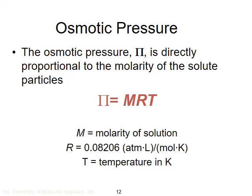Osmotic pressure, denoted with the capital Greek letter pi, is directly proportional to the molarity of the solution (capital M) times the ideal gas constant R times the temperature of the solution. Molarity is in units of moles of solute per liter of solution. The ideal gas constant used is 0.08206 atmospheres times liters divided by moles divided by Kelvin, which cancels out the liters and moles in the molarity. Temperature must be converted to Kelvin, and the final osmotic pressure will be in units of atmospheres.